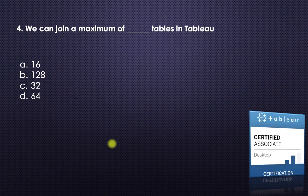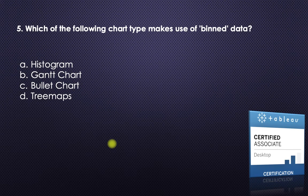Next: you can join a maximum of how many tables in Tableau? This is something we all know when we start learning Tableau — the number is 32. So option C, 32, is the answer.